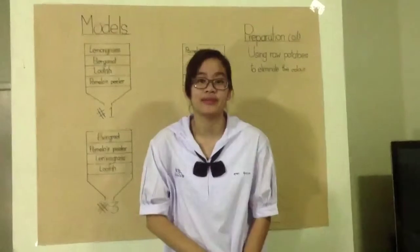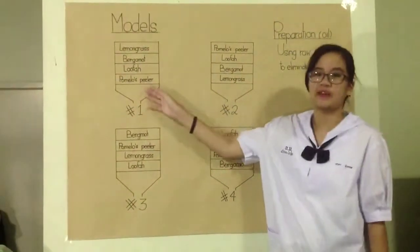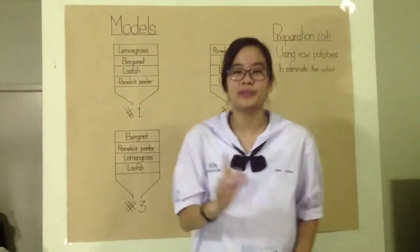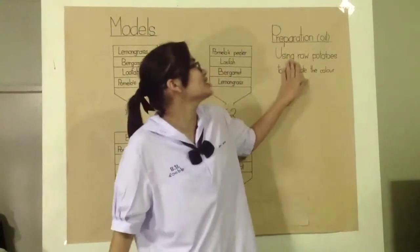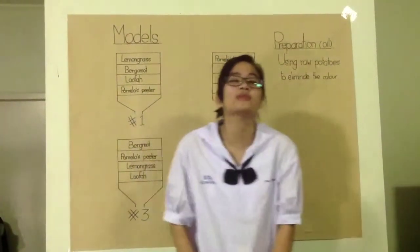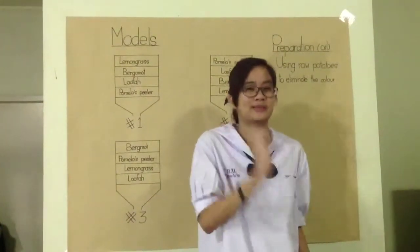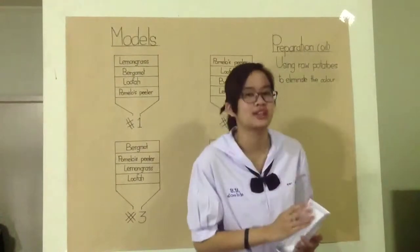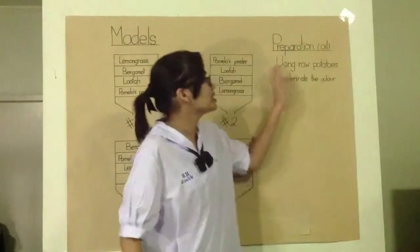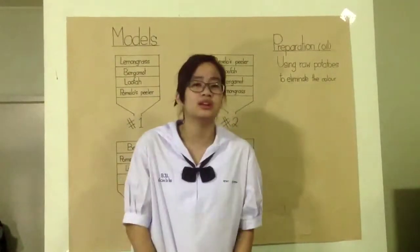Everything needs to have a preparation. Also in my project, I need to prepare the oil before I will let it go through past my filter. I will prepare it by using raw potatoes. Raw potatoes will help to eliminate the color and also a little bit of the smell of the used oil. The raw potatoes that we will use in this case will be one or two centimeters thick.